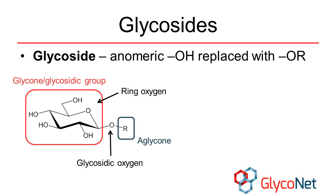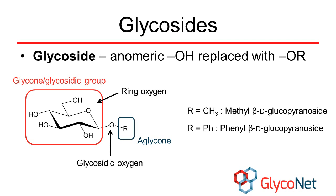Cyclic reducing sugars have an alcohol attached to carbon 1 and can interconvert between different ring forms through the open chain. This process is called mutarotation. A glycoside is formed when we replace that OH with a different group bonding through the glycosidic oxygen, which prevents mutarotation. A non-carbohydrate R group is referred to as an aglycone. To name glycosides, replace the "-e" ending of the reducing sugar with "-ide" and put the name of the aglycone substituent at the front. In this example, having a methyl R group would give us methyl-beta-D-glucopyranoside, while a phenyl substituent would be named phenyl-beta-D-glucopyranoside.